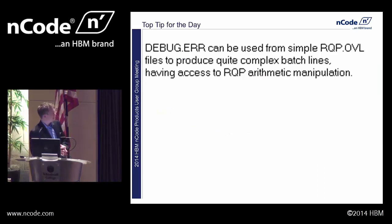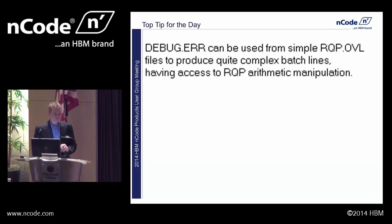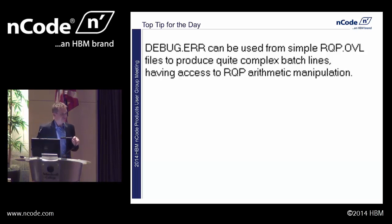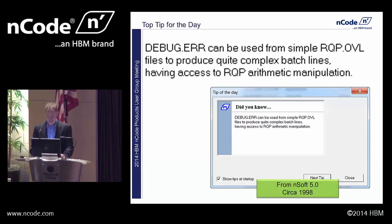First off, top tip of the day: debug.error can be used from simple RQP .ovl files to produce quite complex batch lines, having access to RQP arithmetic manipulation. RQP stands for Report Quality Plotter. Believe it or not, this is actually not your top tip of the day — this is your trip back in the Wayback Machine, a trip down history. This is a tip from Nsoft, believe it or not.